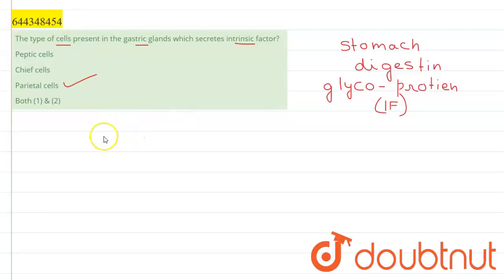These parietal cells are present in the lining of the stomach and they are also known as oxintic cells. These oxintic cells secrete the intrinsic factor and they secrete HCl, that is hydrochloric acid, which is an essential component of the gastric juice. So here, our right option for this question is parietal cells.